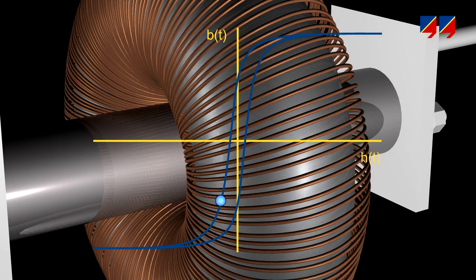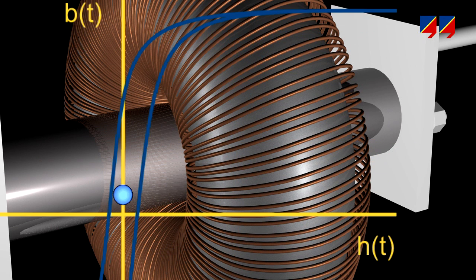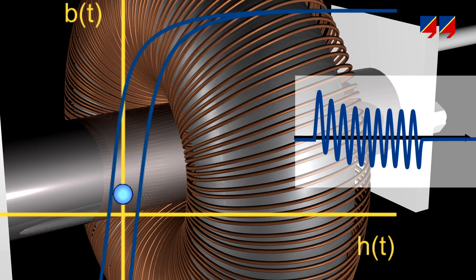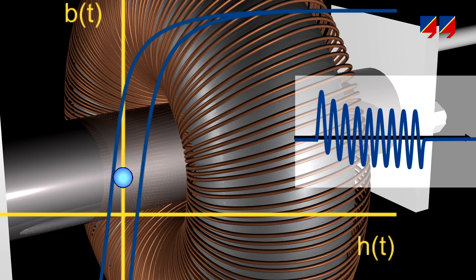A critical situation arises if a CT core has high magnetic remnants from a previous fault, and then a subsequent short-circuit fault occurs. This is exactly what happens in line protection schemes during an auto-reclosure cycle.